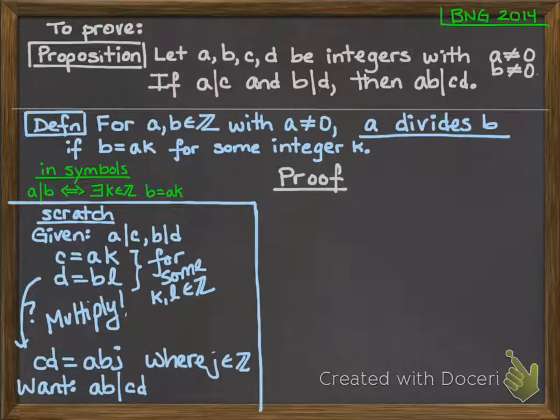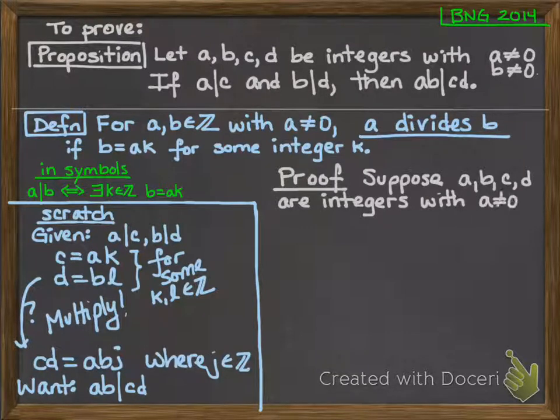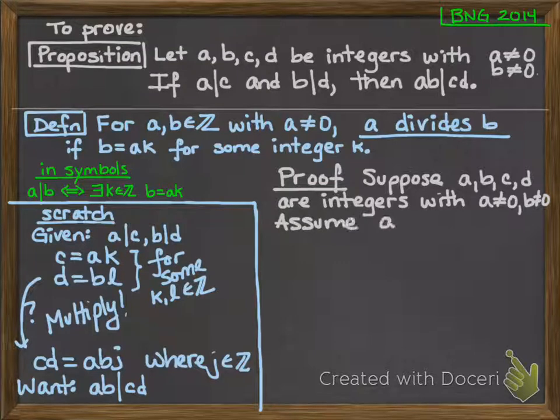So you start the proof by setting the stage with what your universe is and what your hypothesis is. So my universe, I'll start by saying this. Suppose a, b, c, and d are integers with a not equal to 0 and b not equal to 0. Now I'm going to assume a divides c and b divides d.